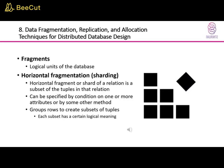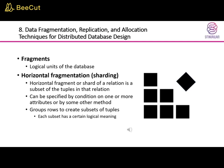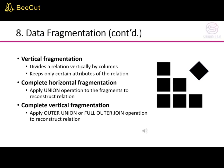Fragments are logical units of the database. Horizontal fragmentation, or sharding, means a horizontal fragment of a relation is a subset of the tuples in that relation, specified by a condition on one or more attributes. It groups rows to create subsets of tuples, each with a certain logical meaning. Vertical fragmentation divides a relation vertically by columns, keeping only certain attributes. Complete horizontal fragmentation applies the union operation to the fragments to reconstruct the relation.